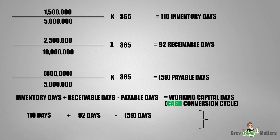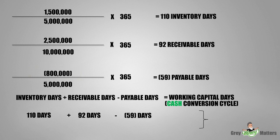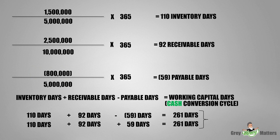you will notice the payable days at negative 59 days. The reason for the negative 59, as mentioned, is due to us having to prepay our supplier 800,000 before receiving inventory. This adds to the pressure of managing cash flow. This basically puts us in a situation where our cash, after the calculation is conducted, is locked away for 261 days, which is almost nine months.